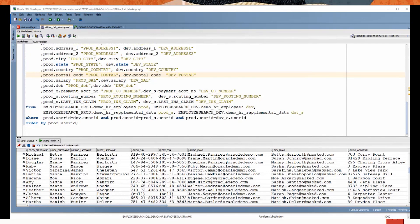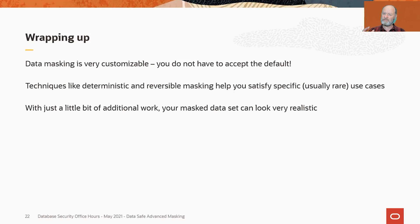This is how you make your test data look more realistic. You go beyond the defaults and make your masking formats something that will be prettier. No difference from a security standpoint, but it can be a big difference if your masked data is being used for acceptance testing or training. Masking is very customizable — you don't have to accept the defaults. There is a lot of capability in there, and we didn't even go into creating your own custom masking formats. Techniques like deterministic and reversible masking won't be used every day, but you'll almost certainly come across cases where they're the right solution.